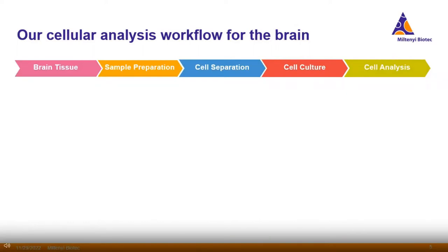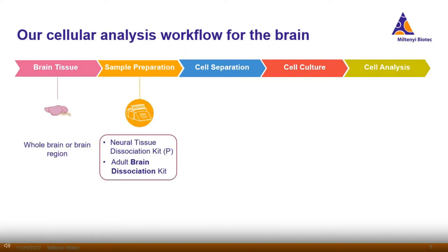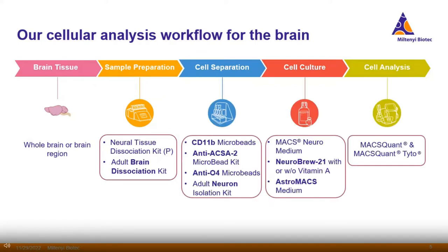Our workflow for dissociation starts with sample preparation where we have dissociation kits and the gentleMACS automated dissociator. For cell separation, we have different microbeads—labeled magnetic beads—to isolate cells. For cell culture, we have media and supplements. And for the analysis, we have a flow analyzer and sorter.